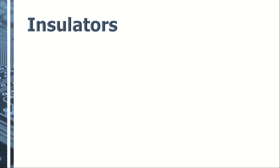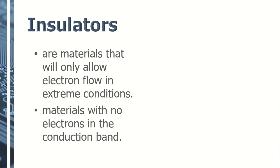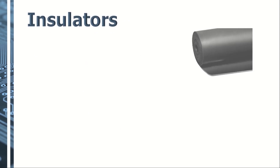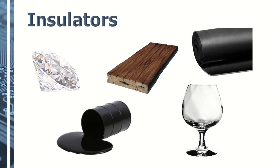Insulators are the exact opposite of conductors. These are materials that will only allow electrons to flow in extreme conditions. They have no electrons in the conduction band. This is because in this kind of material, a large gap exists between the conduction and the valence band, and therefore electrons in the valence band cannot jump to the conduction band. Materials that are good insulators are rubber, wood, glass, oil, and even diamonds.